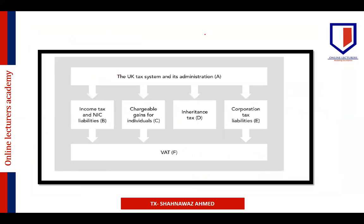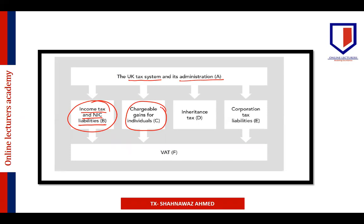The syllabus has six areas. The first area is the UK tax system and its administration. The second area deals with income tax and national insurance contribution liabilities — this is a huge area from which around 30 to 40 percent of marks may come. The next area deals with chargeable gains for individuals, remembering that there will be chargeable gains for corporations as well, and usually there is a 10-mark question on chargeable gains in Section B.